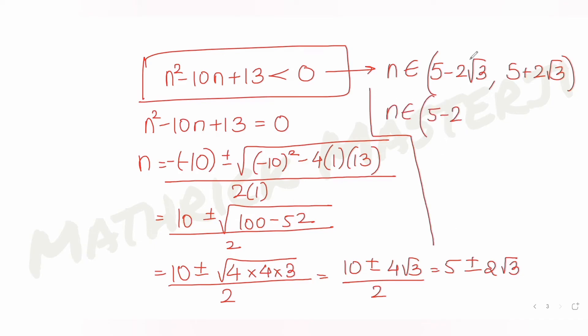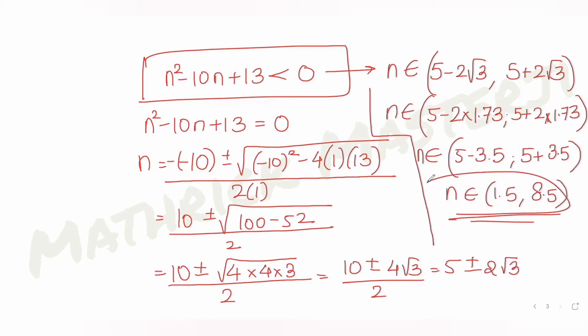5 minus 2 times root 3, we know it is something 1.73, and this is 5 plus 2 times 1.73. From there you get 5 minus 3.46, so about 1.5, and this gives you 5 plus 3.46, so 8.5. So n belongs to any value between 1.5 and 8.5. N can have for the second part all the values from 2, 3, 4, 5, 6, 7, 8.